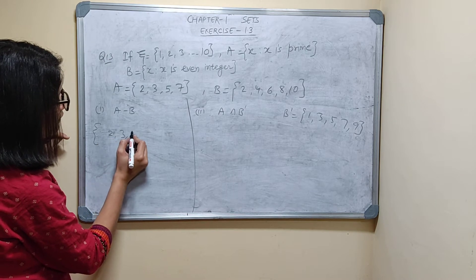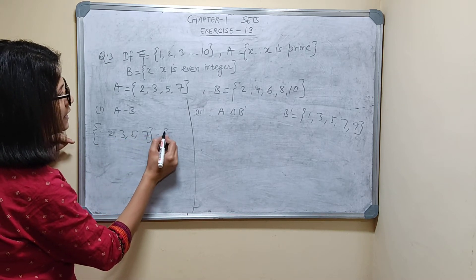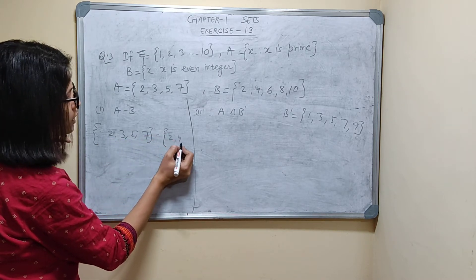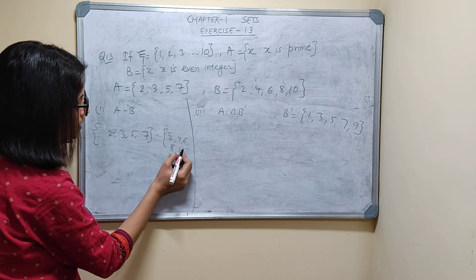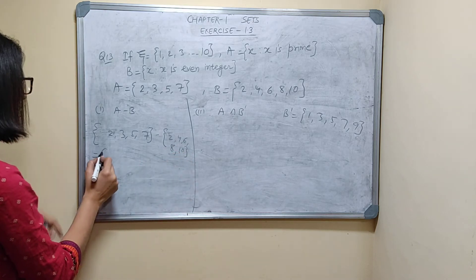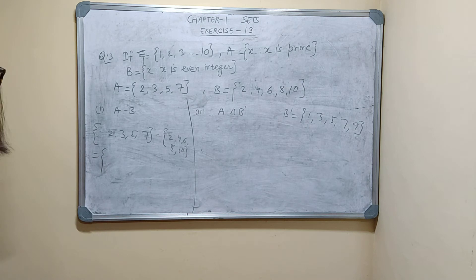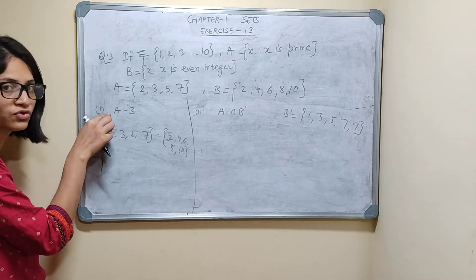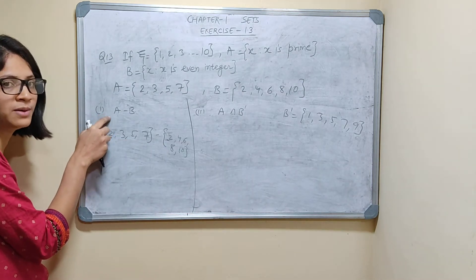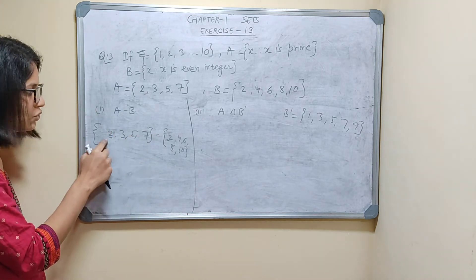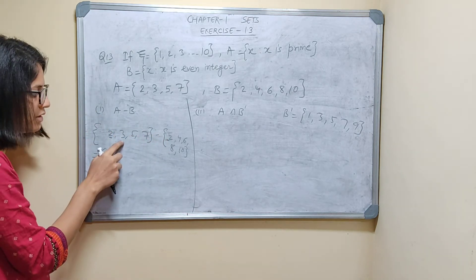So, 2, 3, 5, 7, minus 2, 4, 6, 8, 10. A minus B: 2, which belongs to A, element which belongs to A but not belong to B. 2 belongs to B, so I can't write. 3.